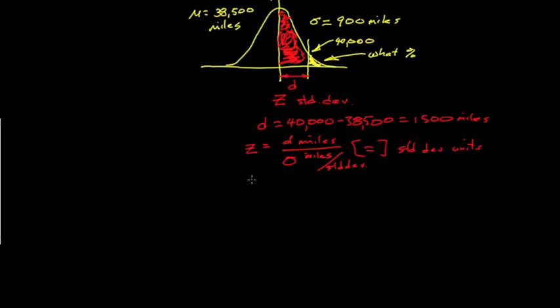So, let's calculate Z. Z, then, is equal to 1,500 miles. And we divide it by 900 miles, and we get Z as the numerical value of 1.666, and so on. So, we need to go to our Z table.